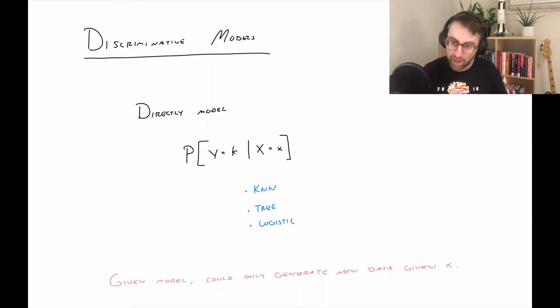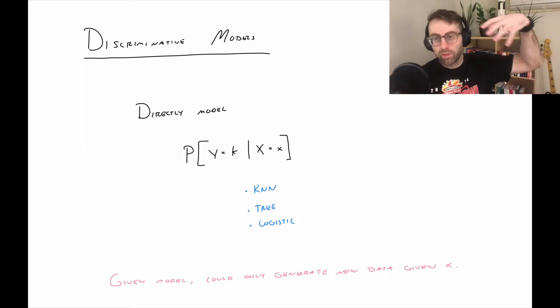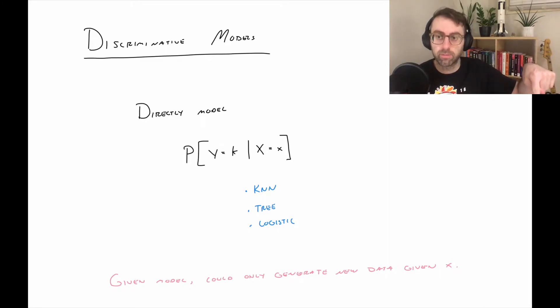And this statement that I have at the bottom is how I start to think about this when we move on to what a generative model is. With the model that we've obtained in a discriminative model, we could not generate new data. We could, if you give me an X value,